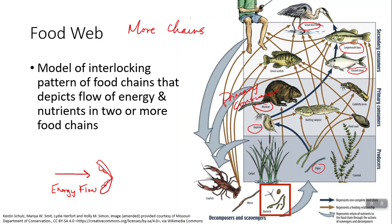Some of these organisms, depending on which pathway you take, might be secondary or tertiary consumers. Usually you'll be asked more about what happens when you change things in a food web.